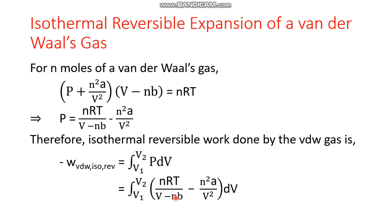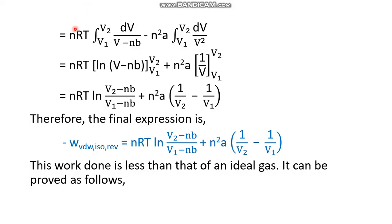To perform the integration, we take the constant terms outside the integral sign. We integrate dV/(V − nb) from V₁ to V₂ giving nRT, and take out n²a as a constant for the term dV/V². Since T is constant (isothermal), dV/(V − nb) gives ln(V − nb) and dV/V² gives −1/V, so the negative sign becomes positive.